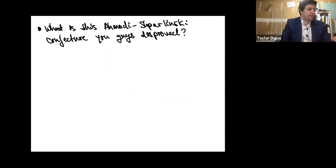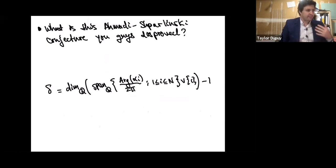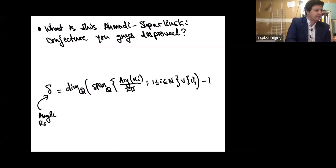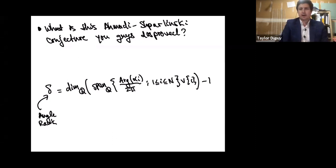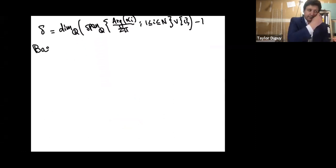Now talking about the angle rank and the conjecture of Ahmadi and Shparlinski. The angle rank is this number between zero and G measuring multiplicative relations between the Frobenius eigenvalues, or equivalently the dimension of the characters of the Frobenius tori. You add one and throw out one because the branch is not well-defined. Since complex conjugates are also roots, the dimension is cut down by half, so the angle rank is at most G.